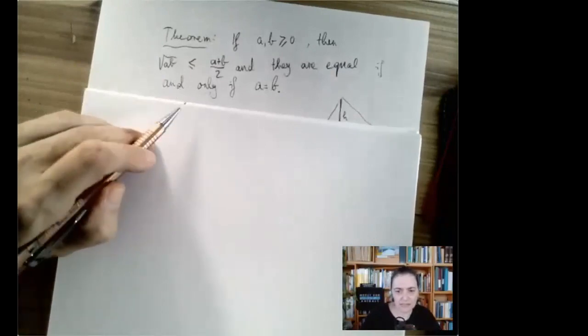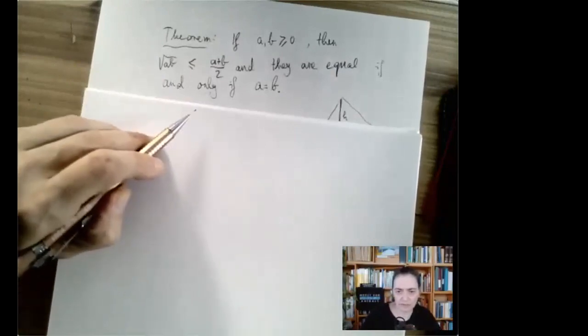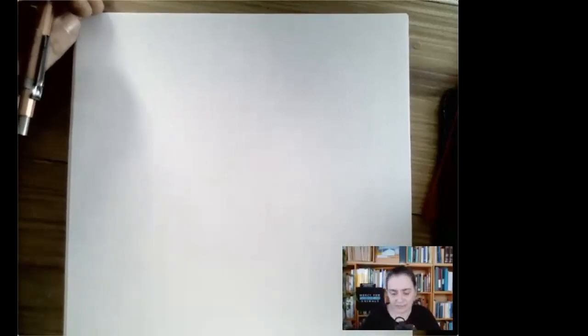The two sides are equal if and only if a equals b. When we introduced this theorem, you have seen an algebraic proof for it, but what I want to show you right now is a lovely geometric proof.